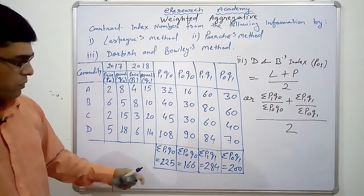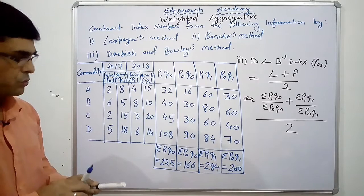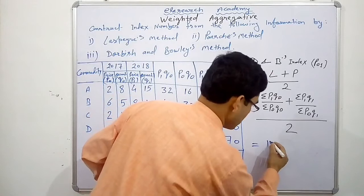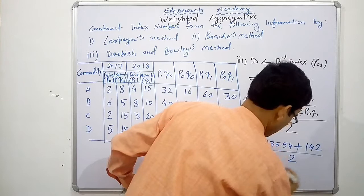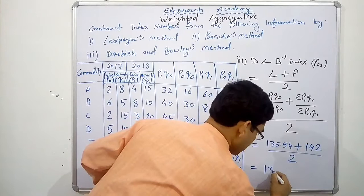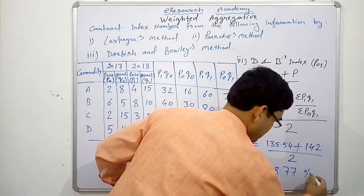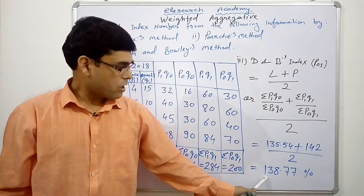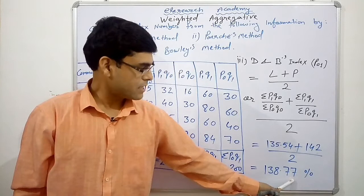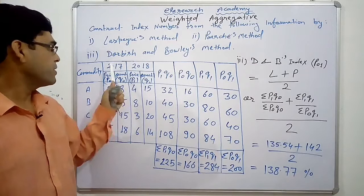So, let's put the value of these Laspier's and Passage's in this formula. So, now, we need all these totals here or the index of first 2 here. So, put the value here. That is equal to Laspier's index was 135.54 plus Passage was 142 by 2. So, this gives us answer as 138.77 per cent. So, this is our answer by Dorbys and Bowles' method. So, according to Dorbys and Bowles, there is an increment by 38.77 per cent in these 4 commodities as compared to previous year or base year or 2017.